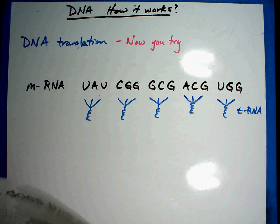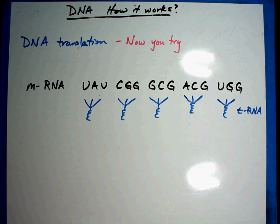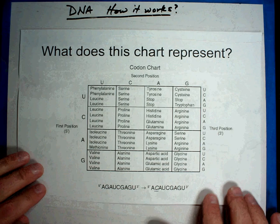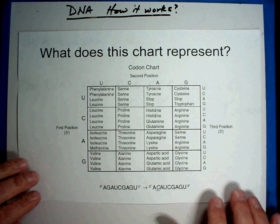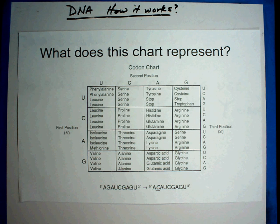Now that you have your messenger RNA and all your transfer RNAs hooked on, here is the chart — a brand new chart for you. Now what you will want to do is pause the video. Figure out each of the amino acids that go with each of the connections. Then we'll come back in a second and see how you did.